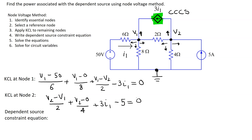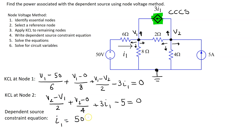Next, we need to write the dependent source constraint equation. We need to express the variable I1 in terms of the node voltages. I1 is the current flowing through the 6 ohm resistor, so we can apply Ohm's law to this resistor to write the term for I1. This gives I1 equals (50 minus V1) over 6.